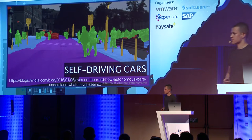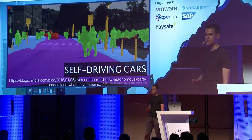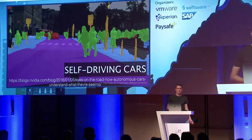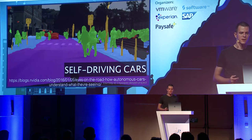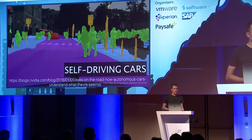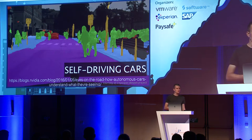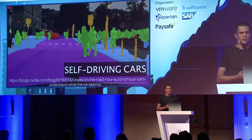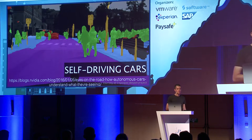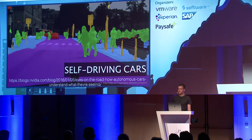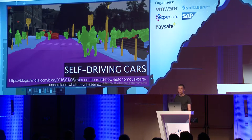Self-driving cars are related to a lot of sensors, and there is a lot of research in that area. NVIDIA is doing a lot of work here. There is computer vision where the system tries to determine which part of a picture corresponds to which part of the road — what is the road, what is the pavement, road signs, et cetera — in order to know what path to take and what to avoid.